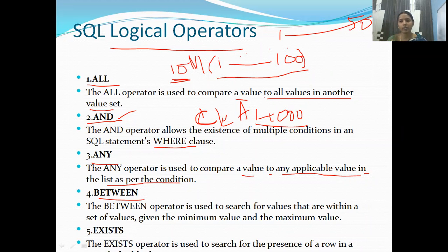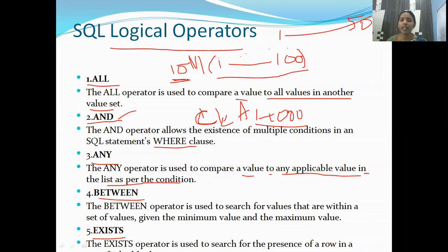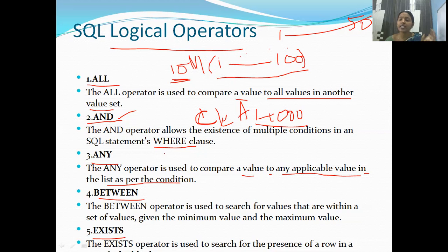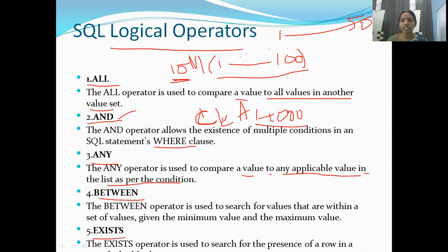EXISTS checks whether a value is present in a list. For example, to check if the value 10 exists in a list of 1 to 100 numbers, or to check if a student named Rakesh exists in the student table — we use the EXISTS keyword for this.